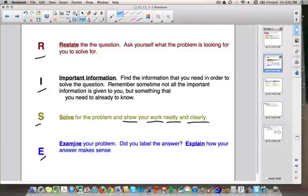The last step, it's two E's. We're going to examine and we're going to explain. In the examine part, we're going to go back and make sure that our answer makes sense, that we answered the right problem, and that we have a label. And in the explain part, we're actually going to explain in words, we're going to write out how we solved the problem, and why those steps were the right steps.